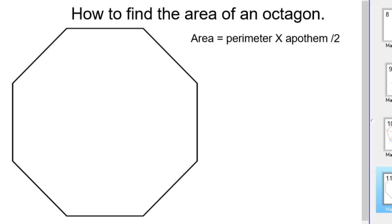All right, how to find the area of a regular octagon. I should have added the word regular, so all of the sides are the same length. Let's just come up with a length. I'm going to say maybe 12 meters for each of the sides.